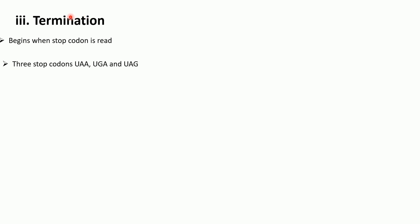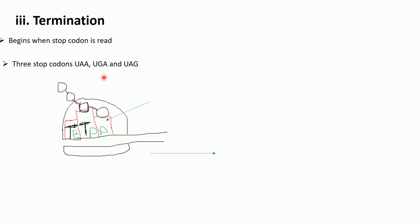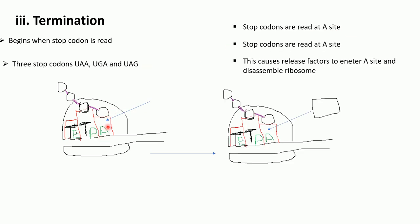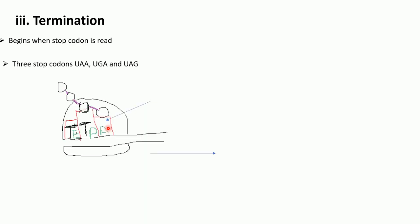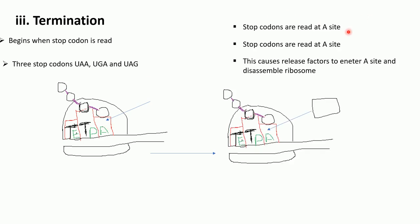The final step in translation is termination. Termination begins when a stop codon is read. There are three stop codons: UAA, UAG, and UGA. Stop codons are read at the A site. When a stop codon is read at the A site, release factors enter the A site. The entry of these release factors causes the disassembly of the small and large subunits of the ribosome.